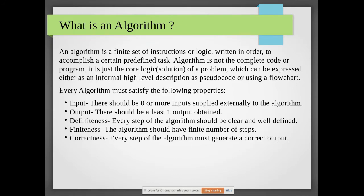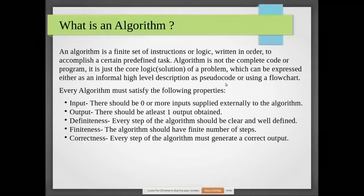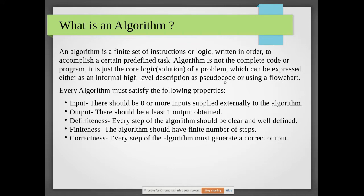An algorithm is not the complete code or program — it is just the core logic of the program, which can be expressed either as an informal high-level description, as pseudocode (like: step one, get the input; step two, make the variable sum equal to zero; step three, repeat the following steps), or pictorially, which we call a flowchart.